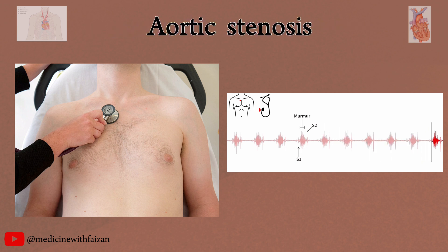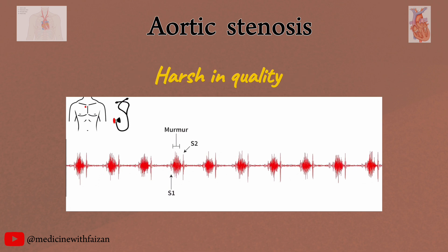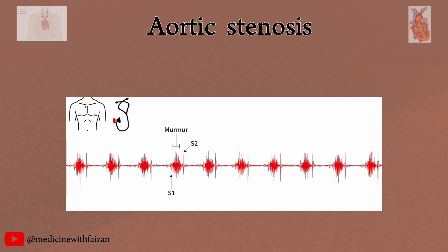The murmur of aortic stenosis is one of the most common murmurs, especially in the older population. The murmur of aortic stenosis is ejection systolic, crescendo-decrescendo in shape, and harsh in quality. It is heard best in the aortic area, that is the second right intercostal space. It radiates equally to both carotids. Listen again to a patient with the murmur of aortic stenosis.